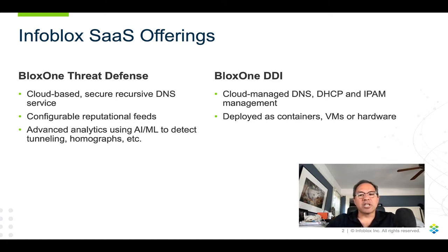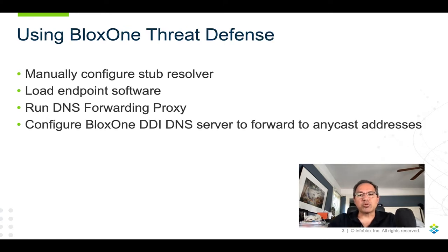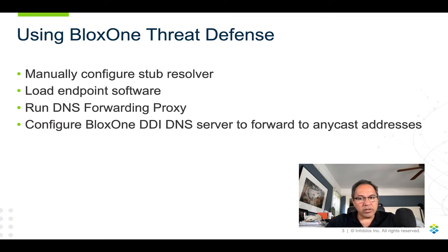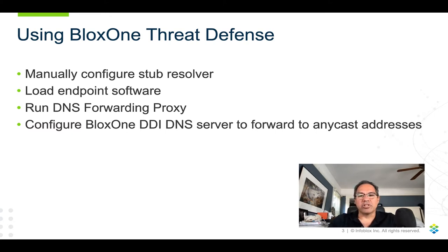I did show off some of the cloud services portal where you configure your cloud-managed DNS and DHCP servers. You can use BloxOne Threat Defense by configuring your stub resolver to query one of our Anycast addresses directly, or you can load our endpoint software on your client, or you can run our DNS forwarding proxy on your network and let clients use that. And of course, you can configure your BloxOne DDI DNS servers to forward queries to our Anycast addresses. And it's this last option that we're the most interested in today.